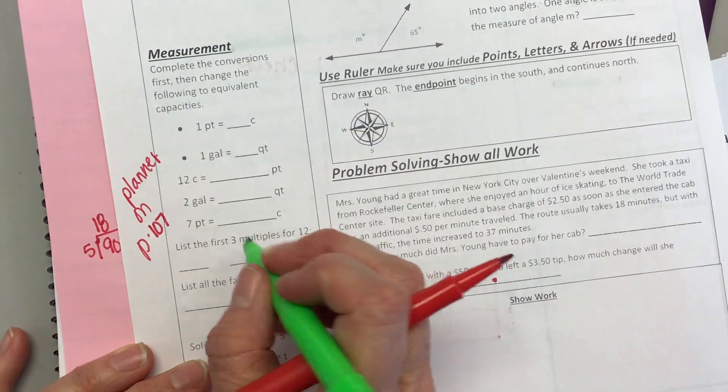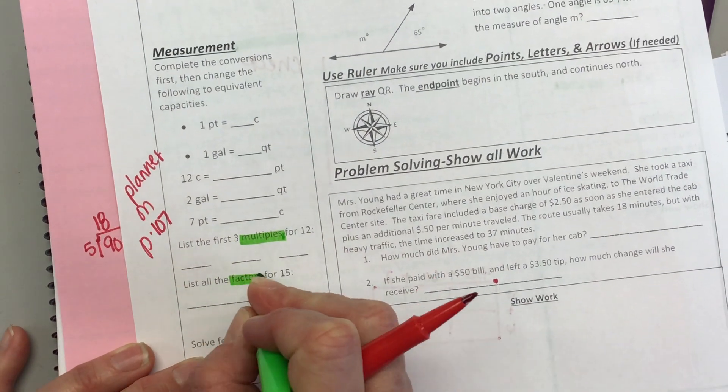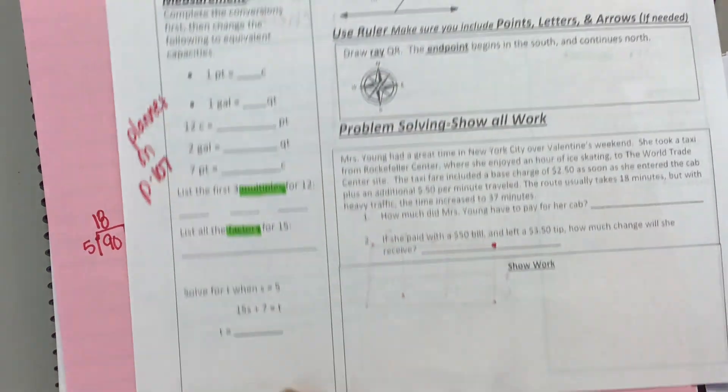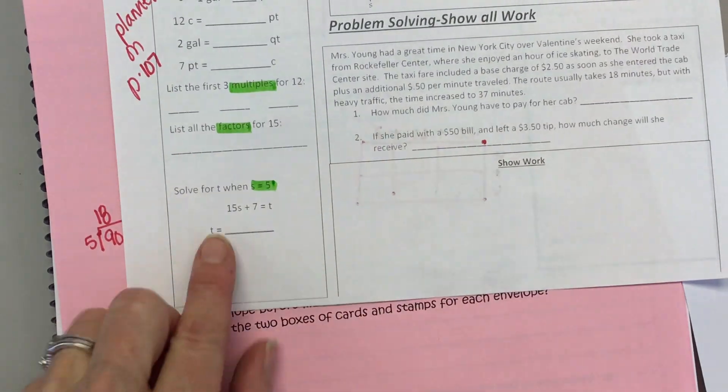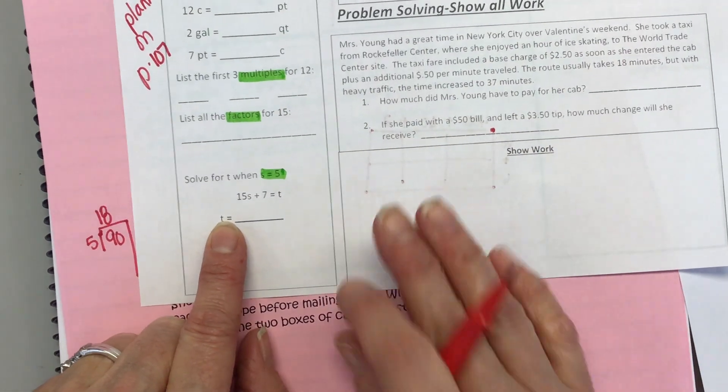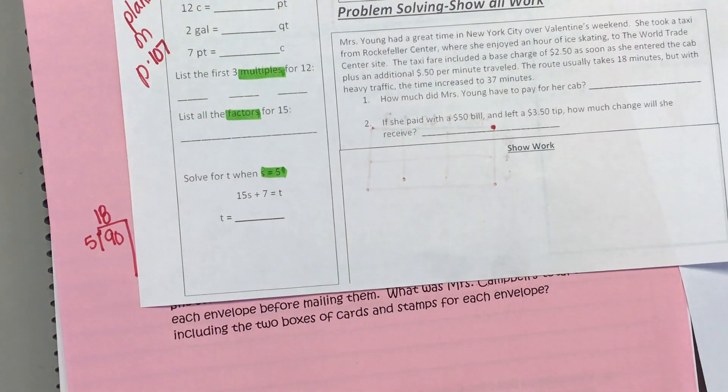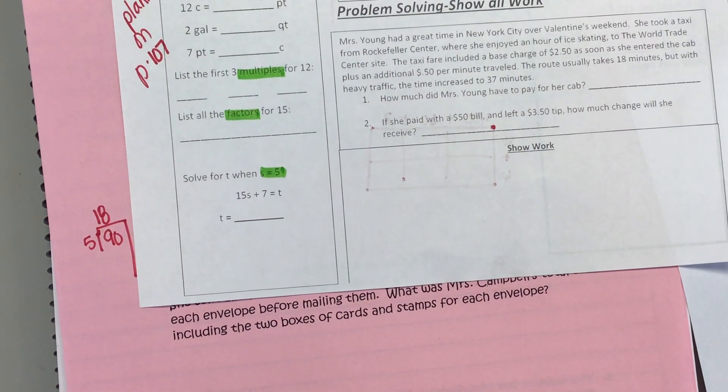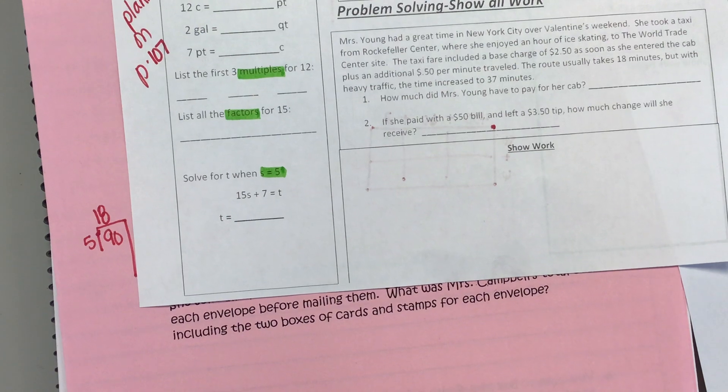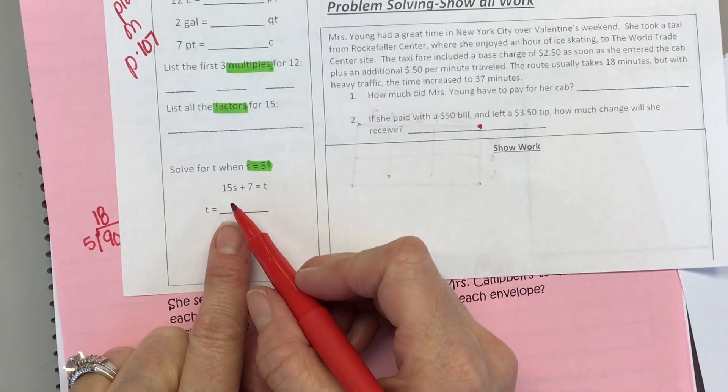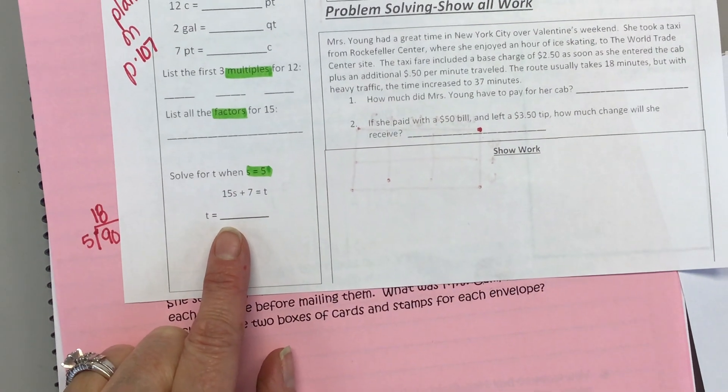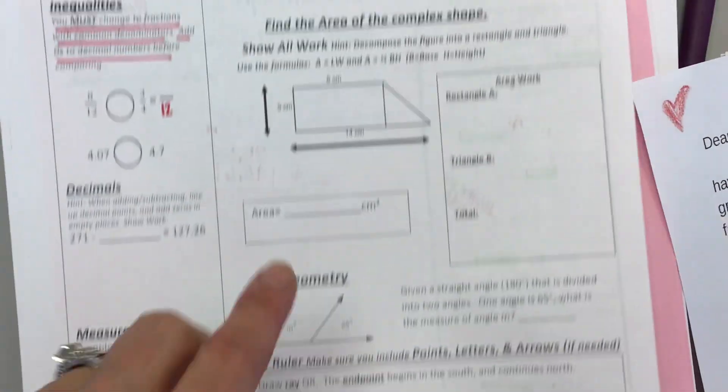Here you're listing multiples. Here you're listing factors. Know the difference. Solve for s. If s is five, what does 15s mean? 15 times s. So it is not 155. You have to multiply five times 15.